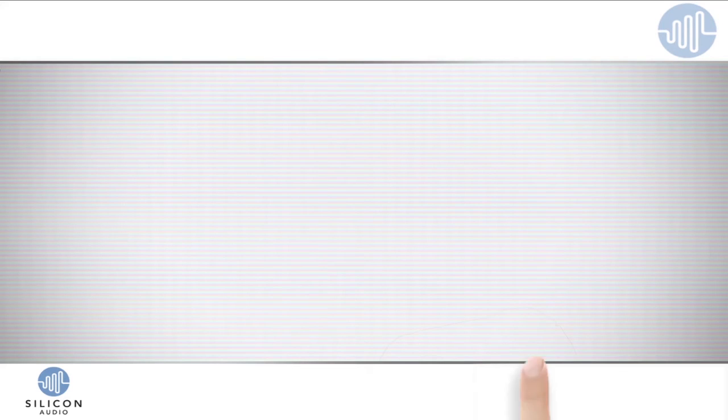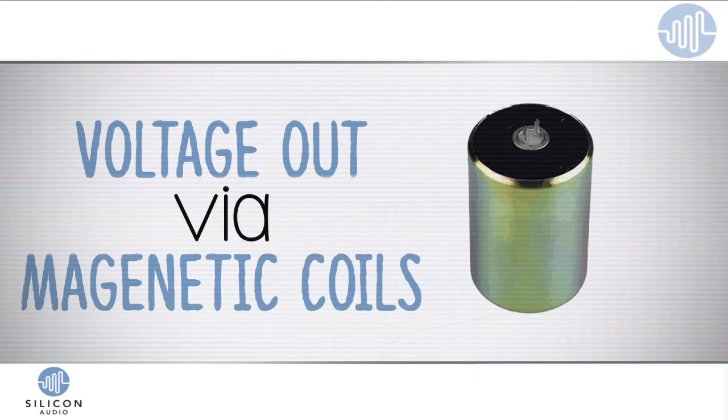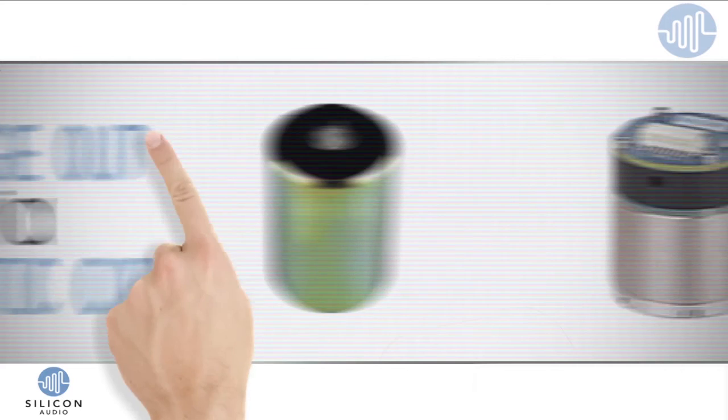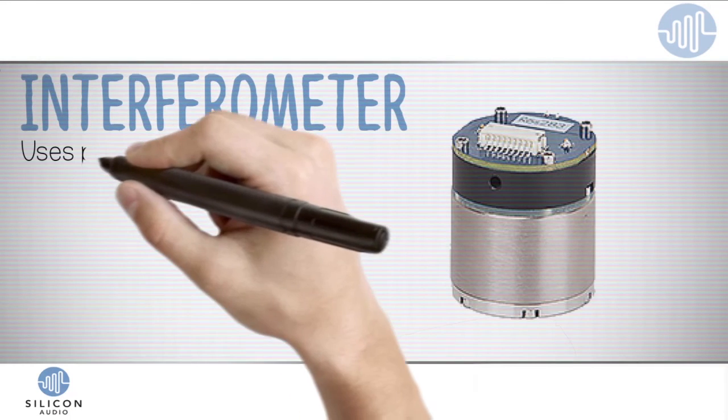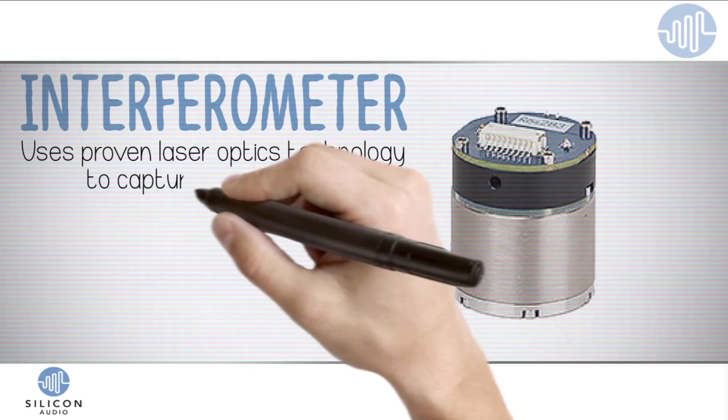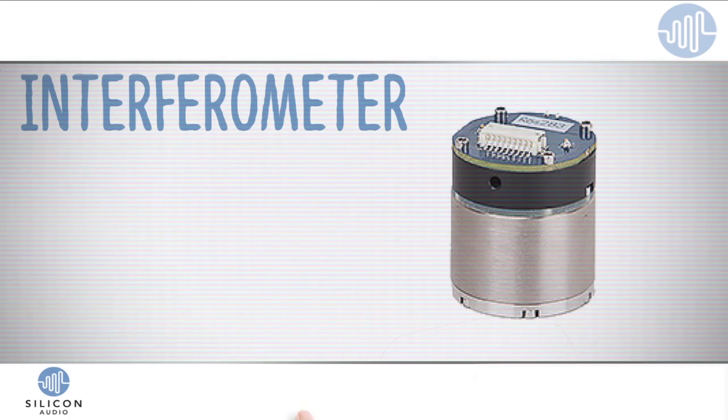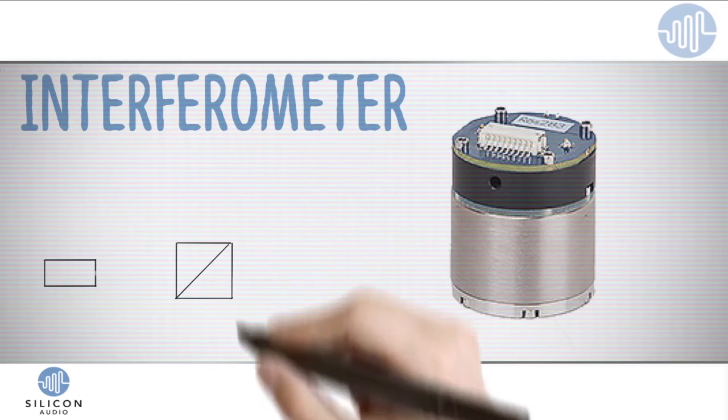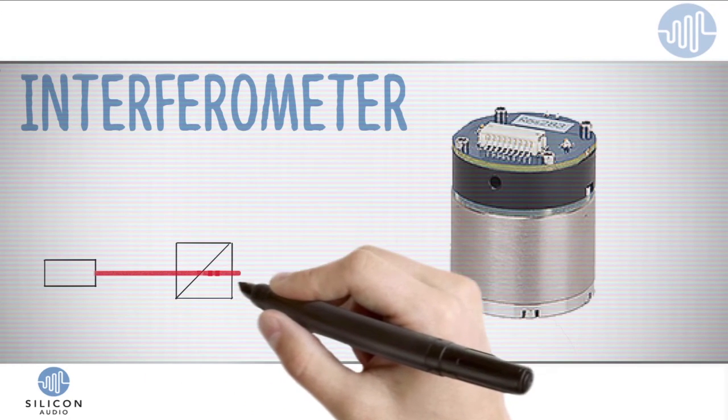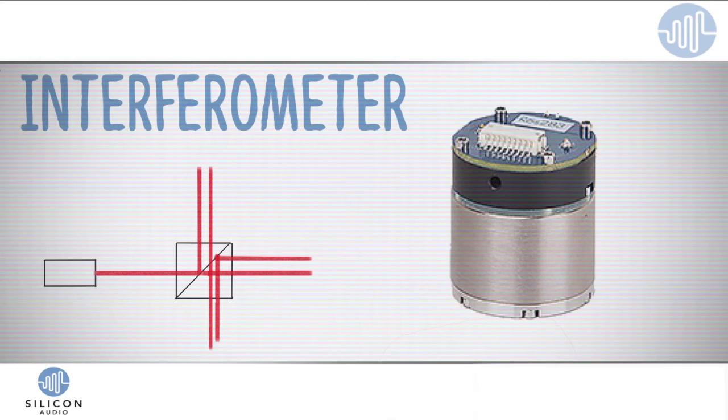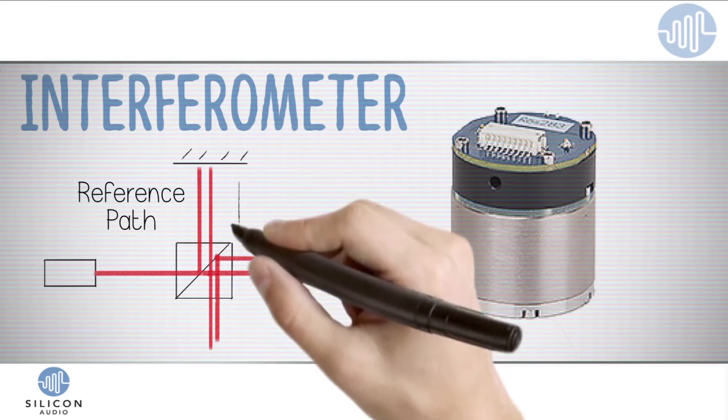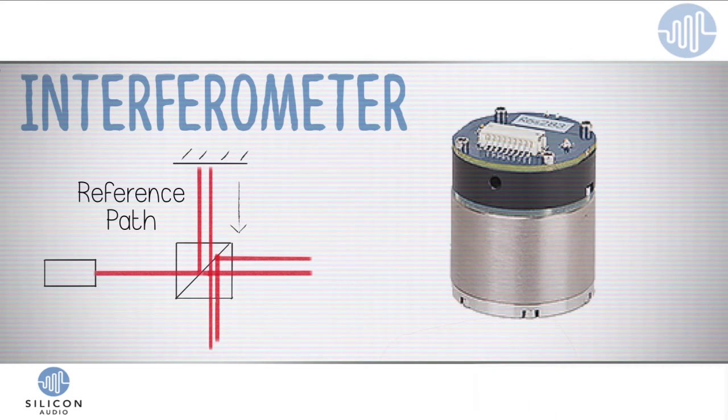Rather than using the geophone's traditional voltage-out-via-magnetic-coils method, we're going to integrate something called an interferometer, which uses proven laser optics technology to capture seismic data. An interferometer works like this. We use laser optics to generate a beam of light, which we then split, causing the light to travel along two distinct paths. On one path, which we'll call the reference path, we have fixed mirrors, which are not responsive to outside motion, to reflect that beam of light back at a consistent, known distance.